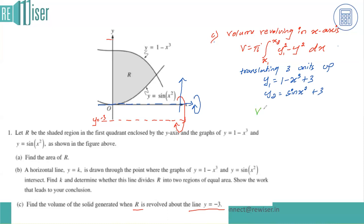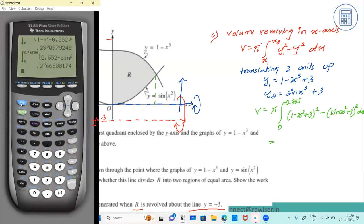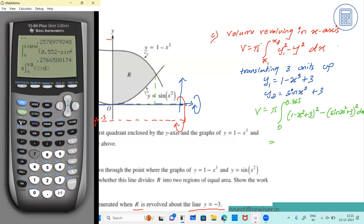The volume integral statement is: V = π times the integral from 0 to 0.765 of (y1 squared minus y2 squared) dx, which is π times the integral from 0 to 0.765 of [(1 minus x cubed + 3) squared minus (sine of x squared + 3) squared] dx. The limits for x remain 0 to 0.765.